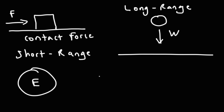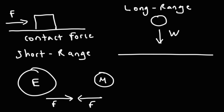Anytime you have two objects, you're going to have a gravitational force between them. Think of the Earth and the Moon — the Moon exerts a gravitational force on the Earth, pulling the Earth towards the Moon, and the Earth exerts a gravitational force on the Moon. So these are action-reaction pairs. Any object above the surface of the Earth is going to feel Earth's gravity, but it's a long-range force because you don't have to be in contact with the Earth to experience it. The Moon has not touched the Earth, yet it feels the force of gravity.